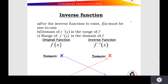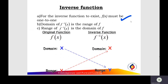The inverse function exists when f(x) is a one-to-one function. Second, the domain of the inverse function equals the range of the function. Third, the range of the inverse function equals the domain of the function f(x).